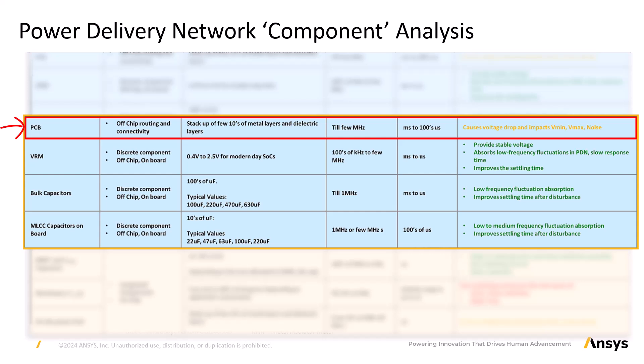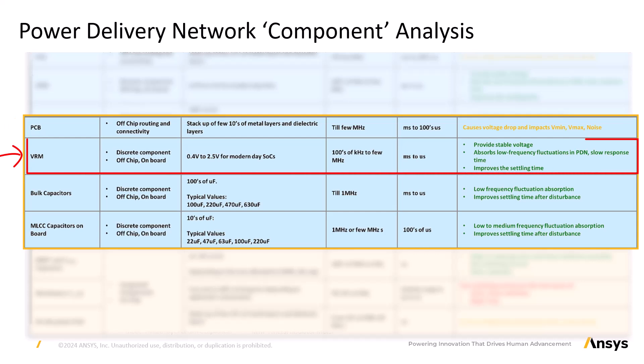The voltage regulator module (VRM) is a buck converter that steps down 12V, 5V, or 3.3V to the level required by SoCs. Typical modern-day SoCs need a supply voltage ranging from 0.4 to 2.5 volts. Most VRMs are discrete components bolted onto the PCB. They are slow to respond to changes in load current, thereby leading to the requirement to add capacitors that react fast enough to changes in load currents. The typical response time is millisecond to microsecond, providing constant voltage to the SoCs against fast switching currents up to the megahertz range, based on the quality or grade of the VRM selected.